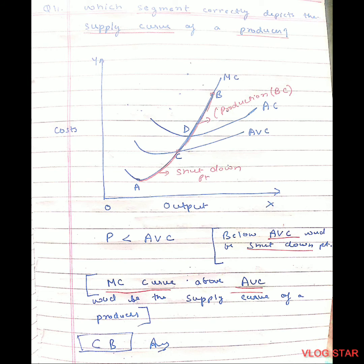Which segment correctly depicts the supply curve of a producer? When price is less than average variable cost (P < AVC), below AVC would be the shutdown point. At the shutdown point, the firm is not able to cover even the variable cost of production. The MC curve above AVC would be the supply curve of the producer — that is, when marginal cost is greater than average variable cost. So in the diagram, point C to B will be the supply curve of the producer.